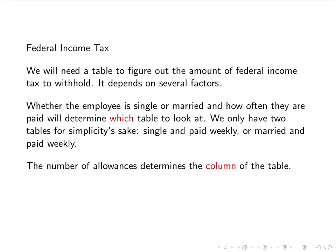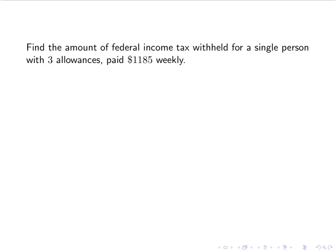Within these tables we have rows and columns. The column shows how many allowances the person is claiming — you can have as many allowances as you have dependents. When you declare taxes in April, you state how many dependents you have. The row shows how much you're making in that weekly pay period.